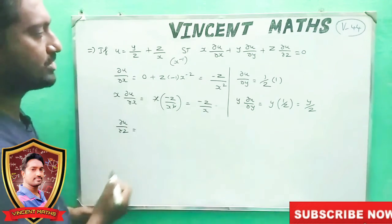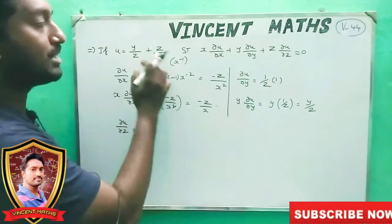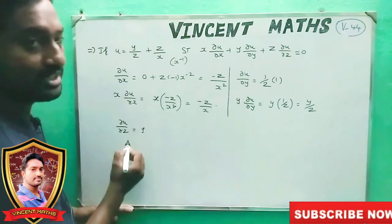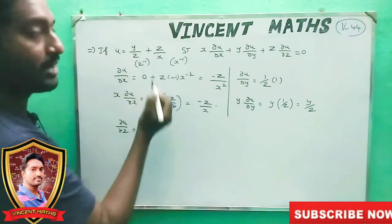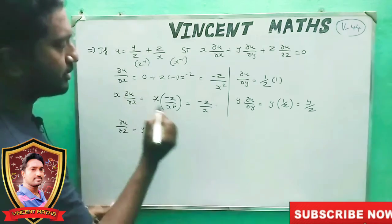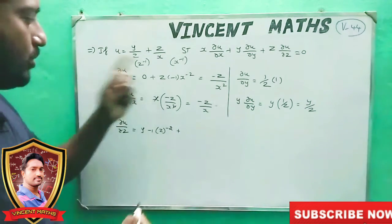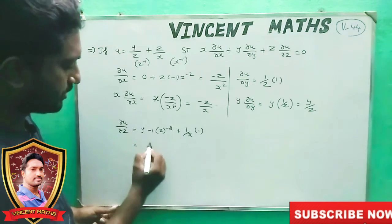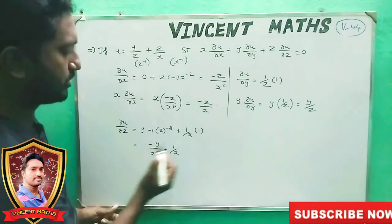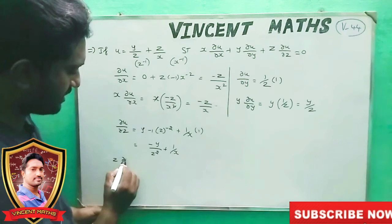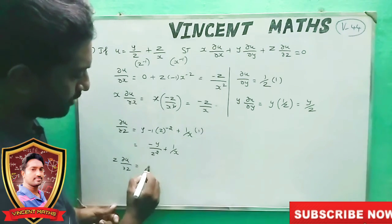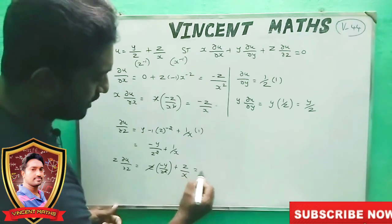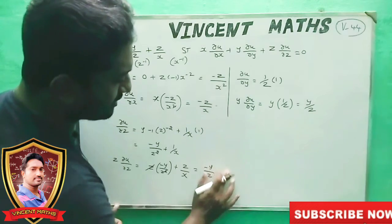We differentiate u with respect to z. If y is a constant value and z is a power, z gives minus 1, then minus 2. 1 by x is a constant value. z differentiate is 1. So z into dou u by dou z: z into minus y by z squared plus z by x, which gives minus y by z plus z by x.